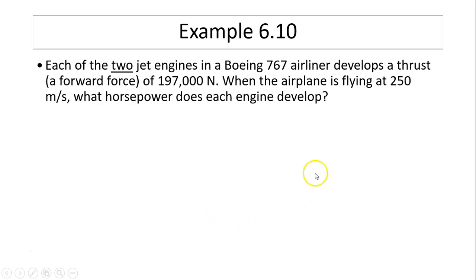Each of the two jet engines in a Boeing 767 airliner develops a thrust of 197,000 newtons. When the airplane is flying at 250 meters per second, what horsepower does each engine develop?